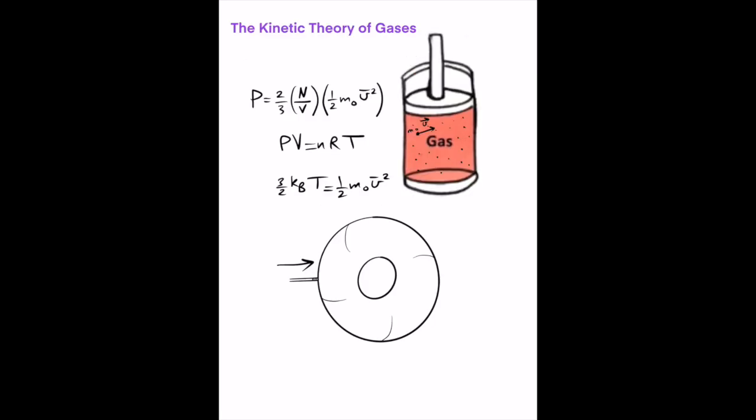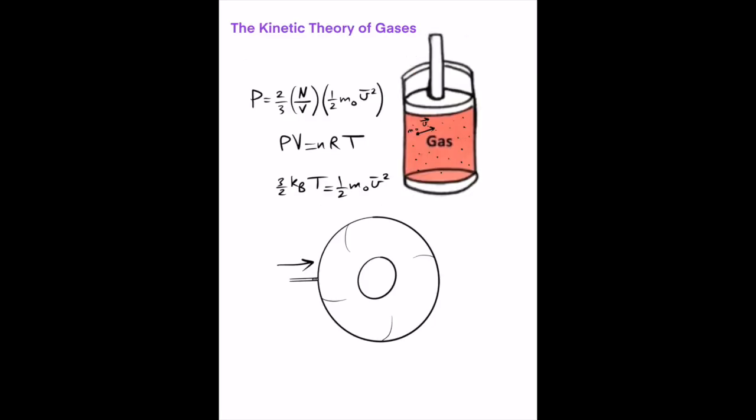An important theory is the kinetic theory of gases, which describes the ideal gas law from a microscopic point of view. Pressure is force per unit area, and this force is the combined effect of the collisions of atoms and molecules with the walls of the container. The pressure is related to the average kinetic energy of the molecules and the number of molecules per unit volume.